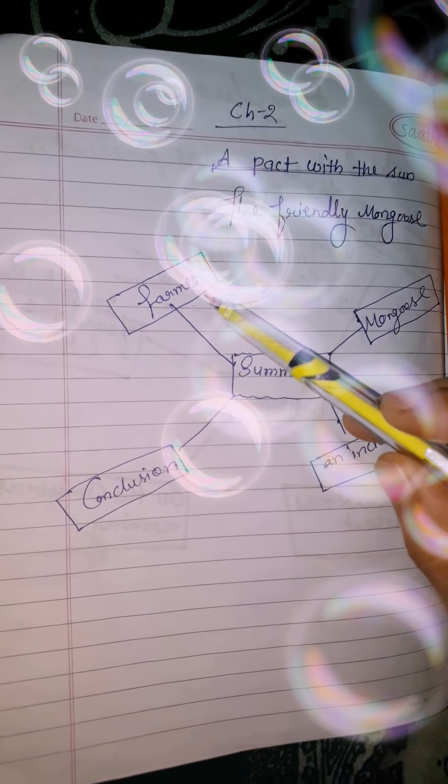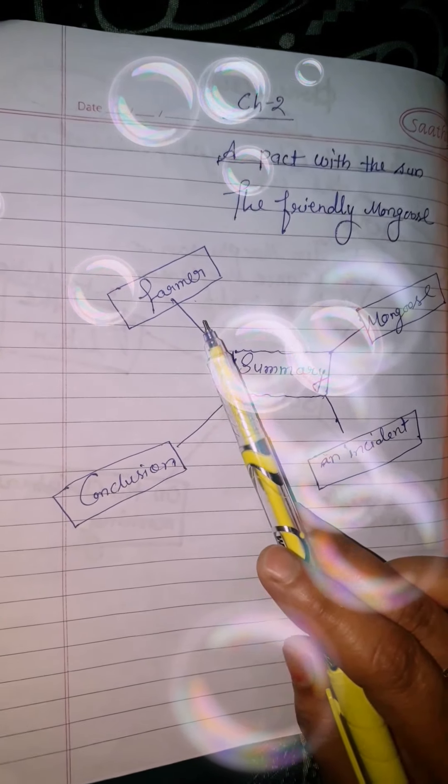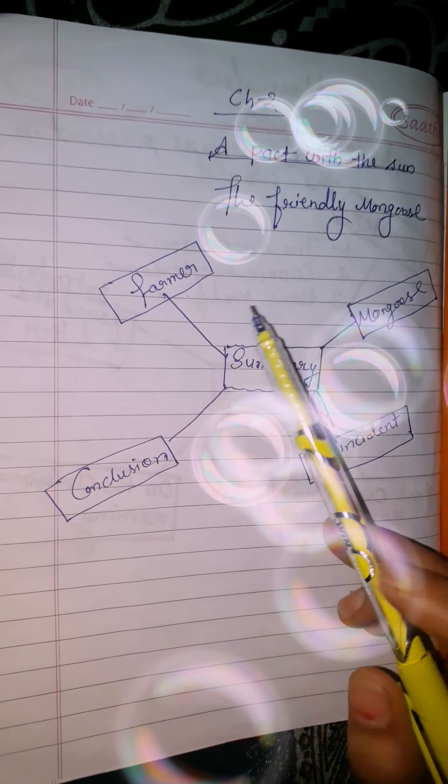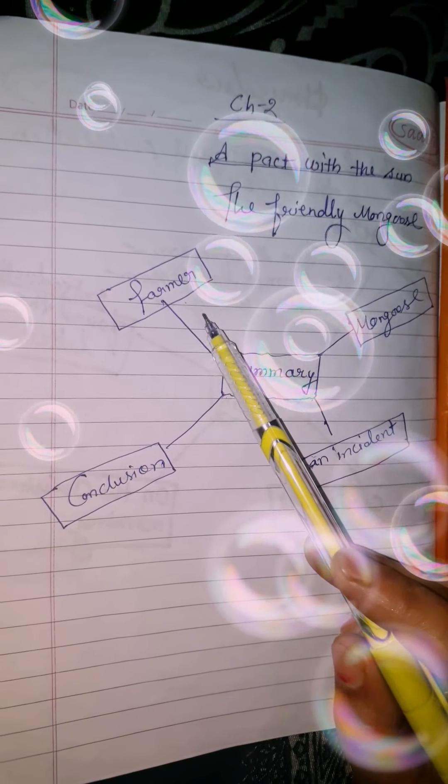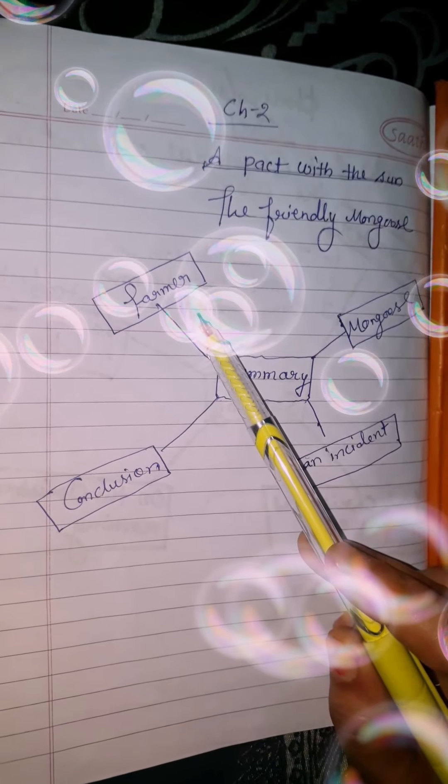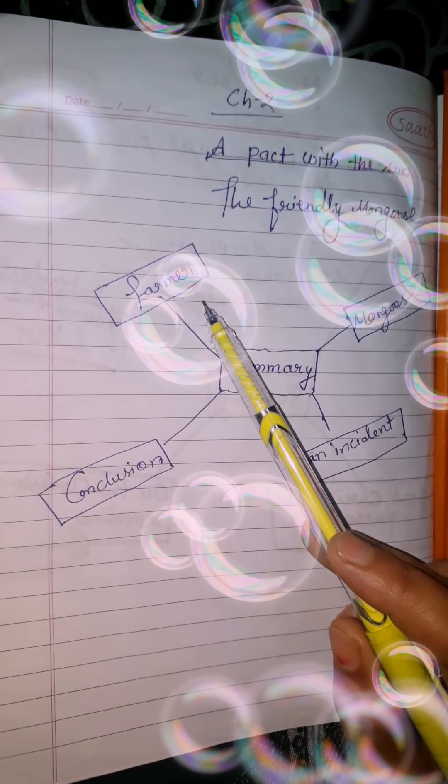So first point is Farmer. Once there was a farmer, his wife and their small son whom they loved very much. One day farmer told his wife to have a pet for his son as a companion for him.